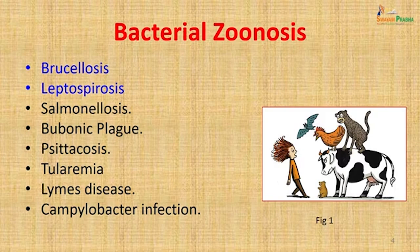The common bacterial zoonotic infections we come across are Brucellosis, Leptospirosis, Salmonellosis (studied in the last session), Bubonic Plague, Psittacosis, Tularemia, Lyme disease, and Campylobacter infection. In today's session we will be discussing the first two: Brucellosis and Leptospirosis.